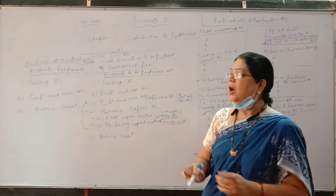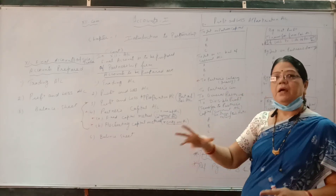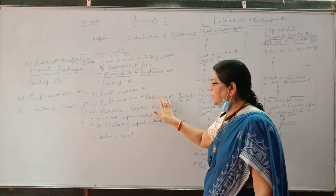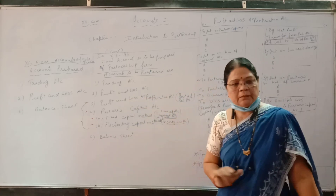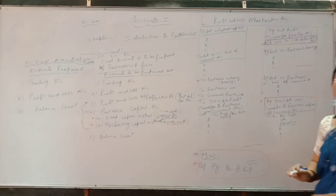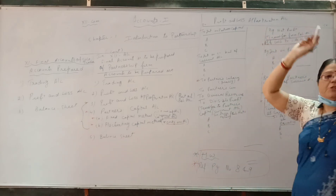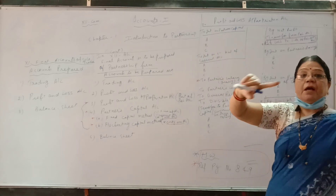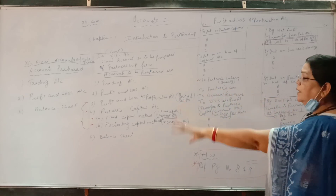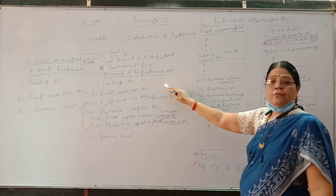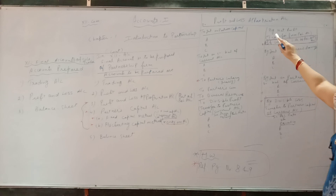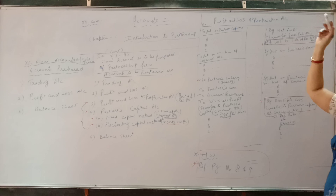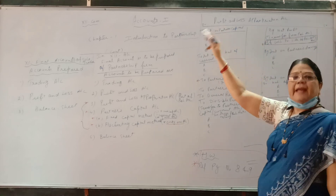There is no change. The only extra accounts we are going to prepare in 12th standard are the P&L appropriation account and the partner's account. I have drawn the format of profit and loss appropriation account. The first entry we always write is to bring net profit from profit and loss account on the credit side. If it is a loss, then we bring it on the debit side.